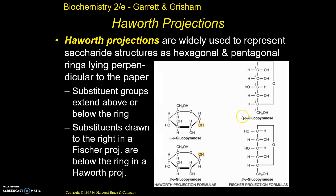If something is the alpha anomer, then the oxygen and hydroxyl are on the same side. Here that hydroxyl is pointed down. So everything you see in a Fisher projection that's on the right side of the carbon backbone — on the same side as the oxygen — those are pointed down: hydroxide, hydroxide, hydrogen, hydroxide, hydroxide, hydroxide, hydrogen, hydroxide. And then everything that's on the left side is going to be pointed up: hydrogen, hydrogen, hydroxide, hydrogen, hydrogen, hydrogen, hydrogen, hydroxide, hydrogen, hydrogen.